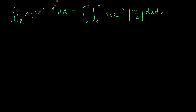So once again I have my change of variables formula. I've plugged in my Jacobian of minus one half, and we'll be taking its absolute value. Notice that integrating with respect to u first would involve a product rule, but if I integrate with respect to v, I might be able to avoid it. So let's switch the order: I have one half from my Jacobian, the integral from 0 to 3, the integral from 0 to 2, of u e to the uv, dv du.